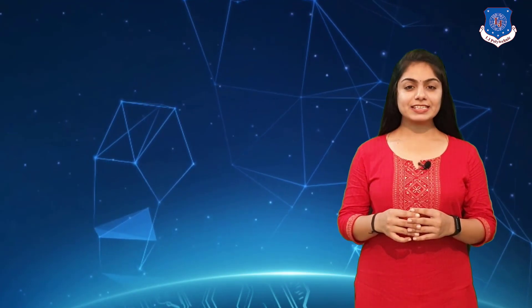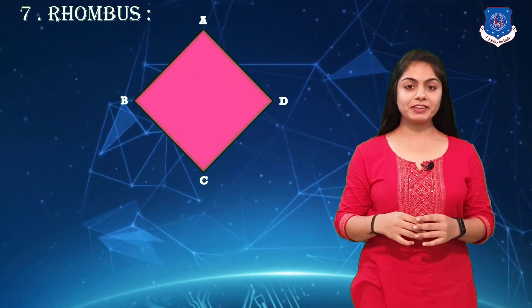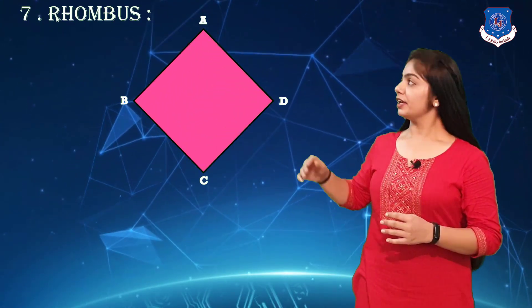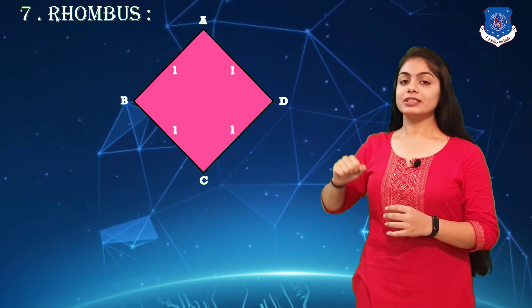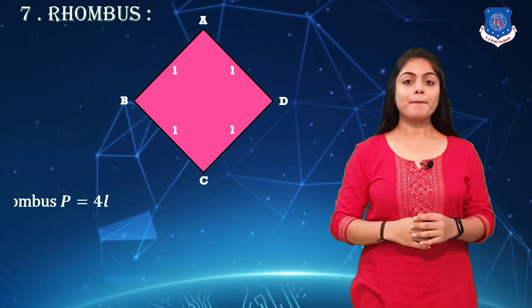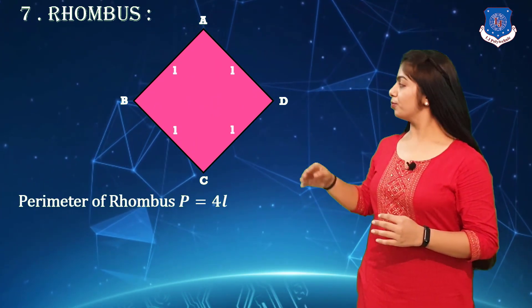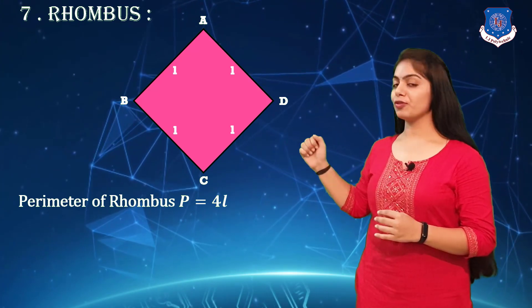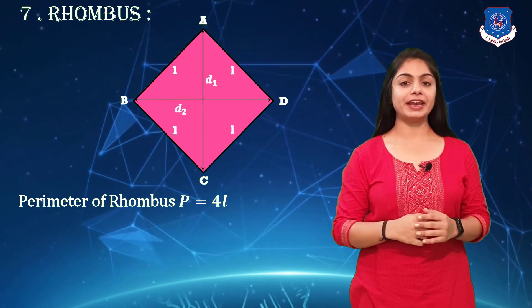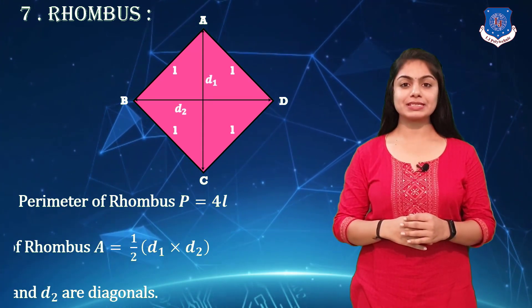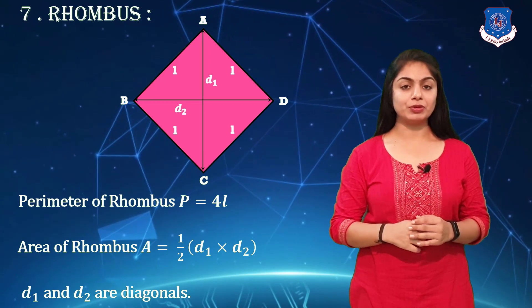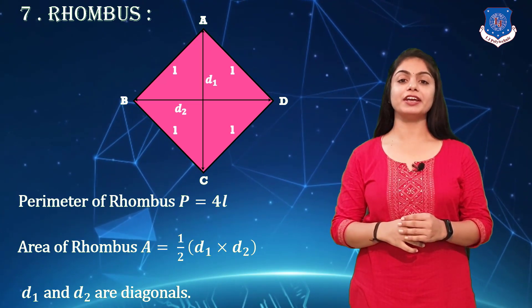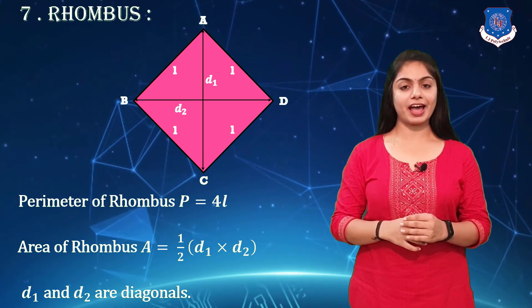The next plane figure is the rhombus. Look at the figure — all four sides are equal. The perimeter of a rhombus is 4L, and the area of a rhombus is (1/2)d₁ × d₂, where d₁ and d₂ are the diagonals.